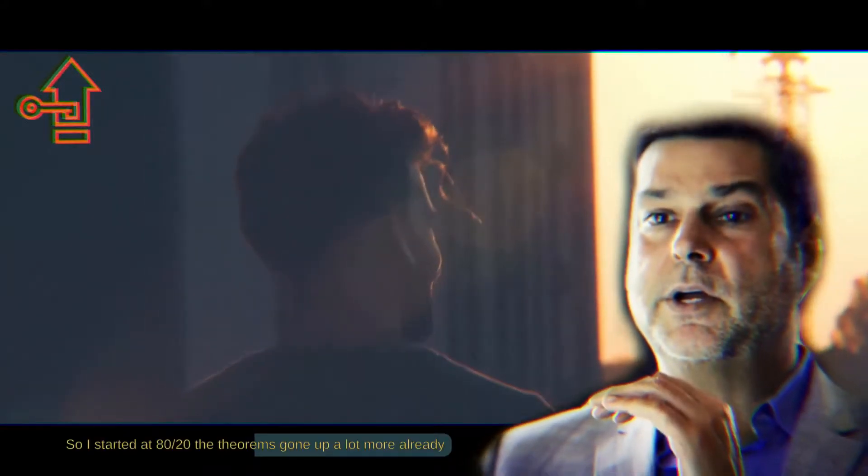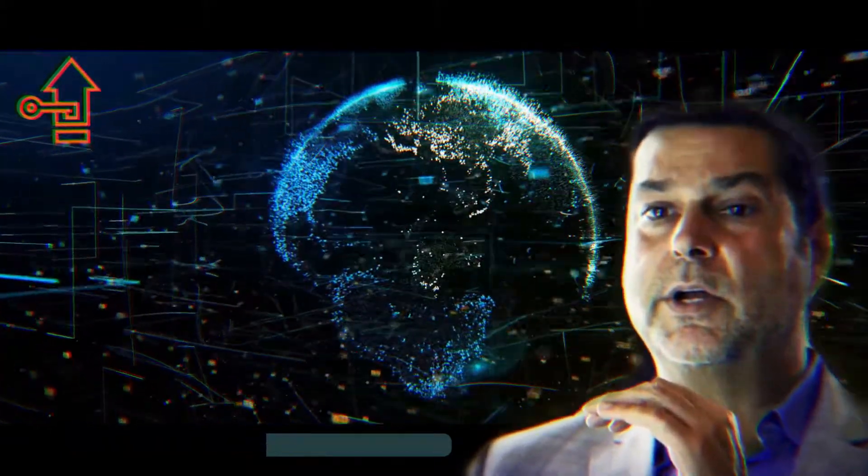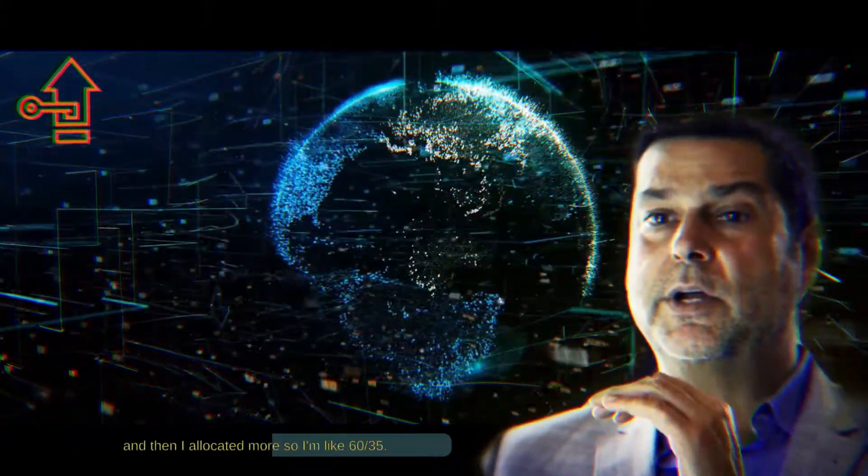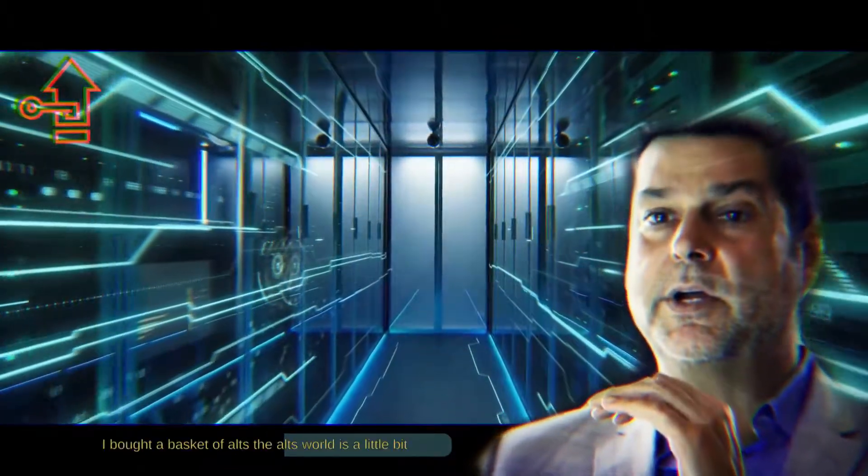So I started at 80/20. Ethereum's gone up a lot more already, and then I allocated more. So I'm like 60/35. I bought a basket of alts.